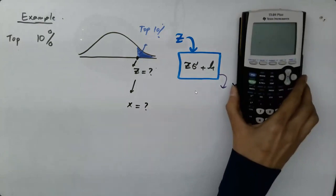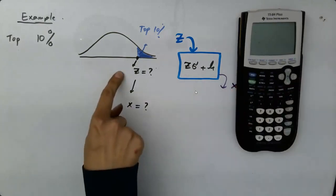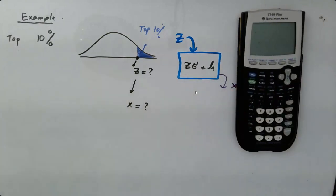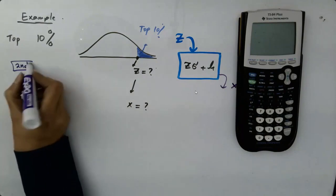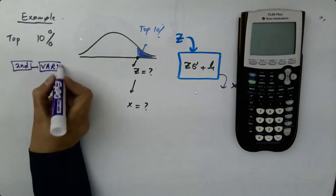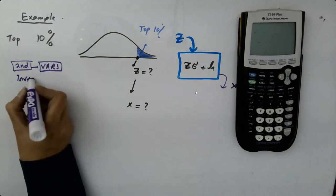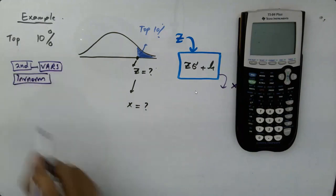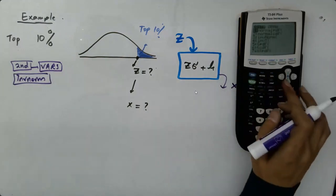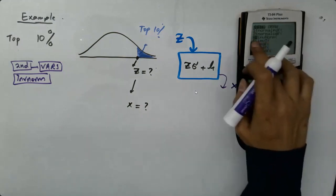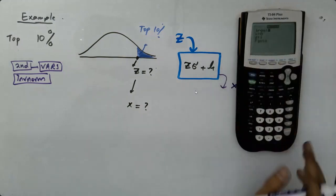Let's use our calculator. To find Z, we're going to use your inverse norm. So go to second vars inverse norm. Let's take a look at this. Second vars, and then inverse norm.